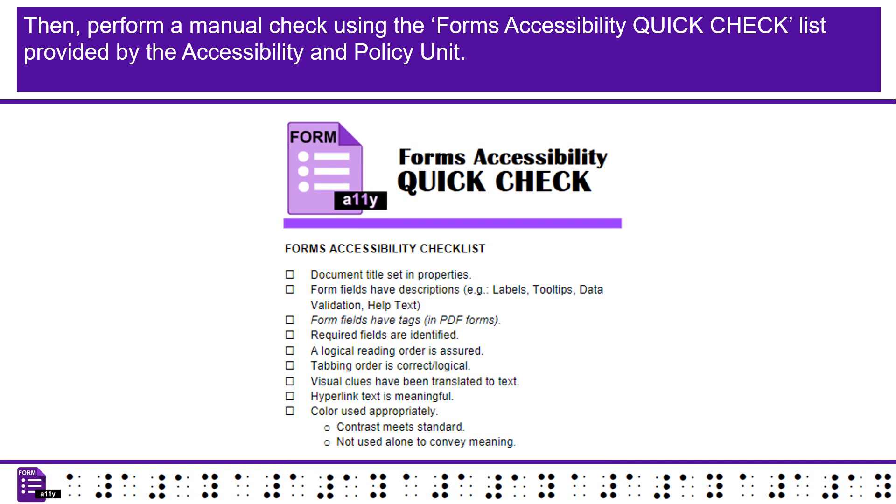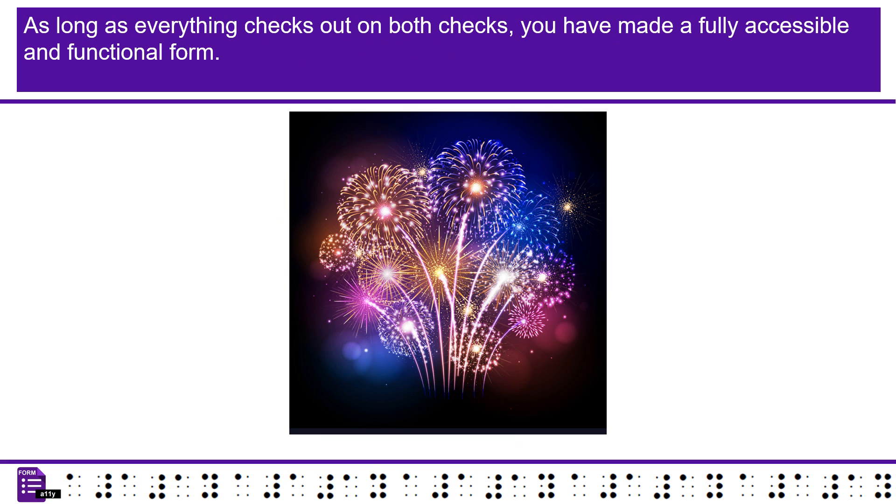Then, perform a manual check using the Form's Accessibility Quick Check List, provided by the Accessibility and Policy Unit. As long as everything checks out on both checks, you have made a fully accessible and functional form.